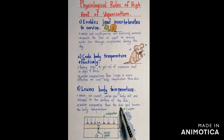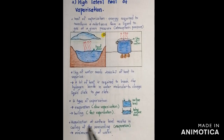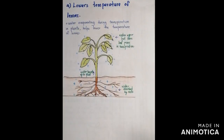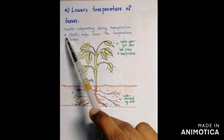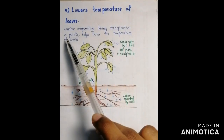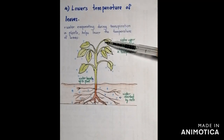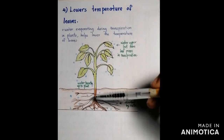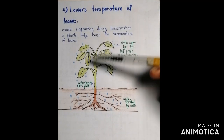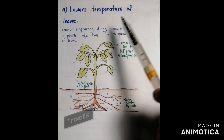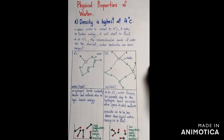Water that evaporates from the skin helps to lower body temperature, because vaporization at the surface level results in cooling. It also lowers the temperature of leaves — water evaporating during transpiration in plants helps lower leaf temperature on a sunny day. When water is lost from the leaves through transpiration, the plant draws up more water through the roots and xylem vessels.